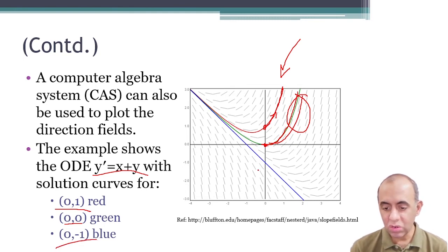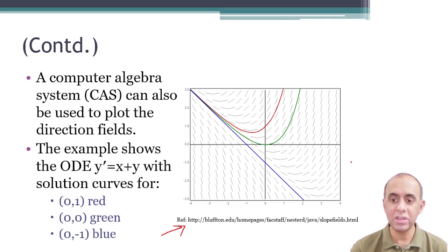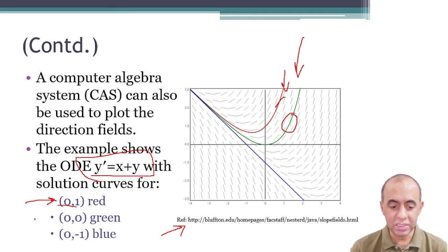Similarly, if we started from 0 comma minus 1, which is this point, we would go towards this. So by the way, there is a tool available. I have written the website here. You can follow this website and you can find it in the description below, and you can follow this website to enter a differential equation and it will draw all the line segments and the direction field for you, and you can actually plot the particular solutions. By the way, these are called particular solutions. This is a particular solution for this initial value (0, 1). This red one, the green one is a particular solution of initial value which is this, and this blue particular solution is for the initial value which is (0, -1).